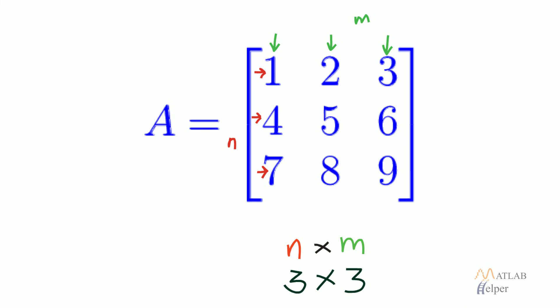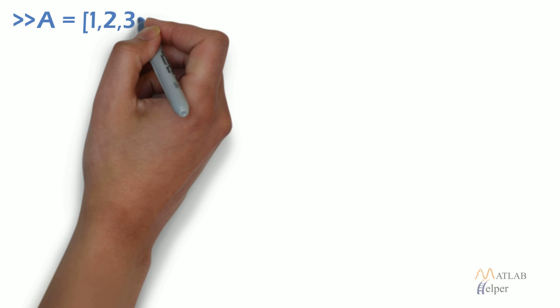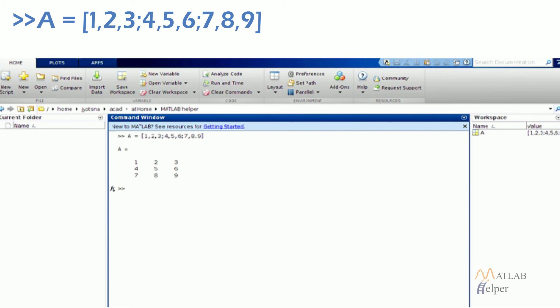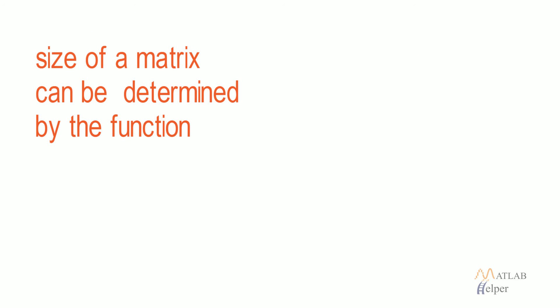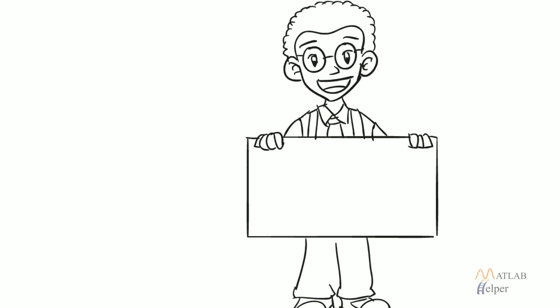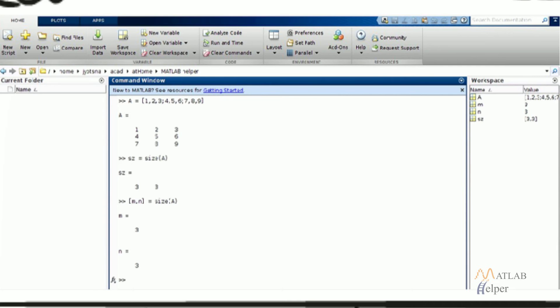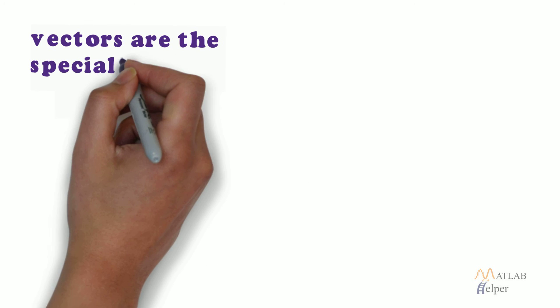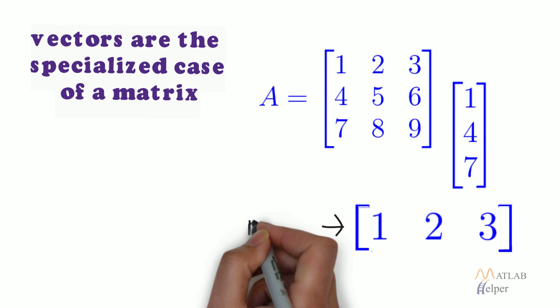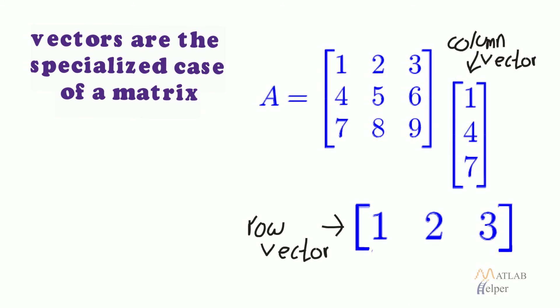In the given example, the matrix is of size 3 into 3. A matrix can be declared as in the image shown. Unlike vectors, size of a matrix can be determined by the function size. Different uses of these functions are shown in the image. As we can see, vectors are a specialized case of a matrix when the size of either rows or columns is equal to 1.